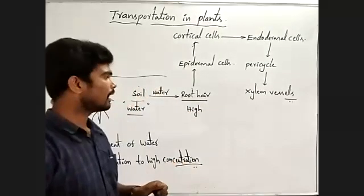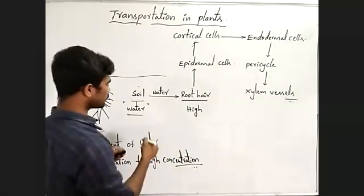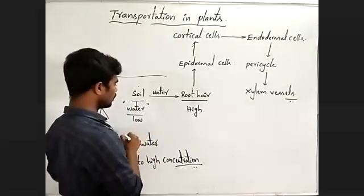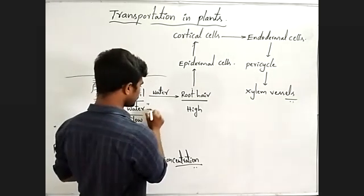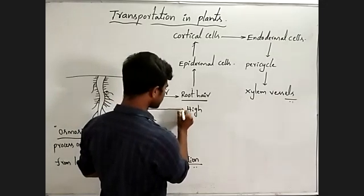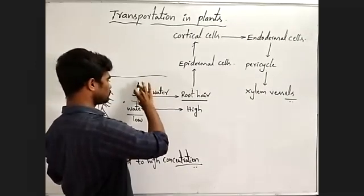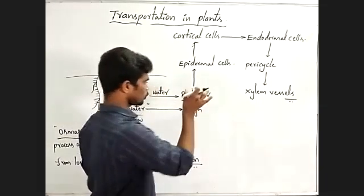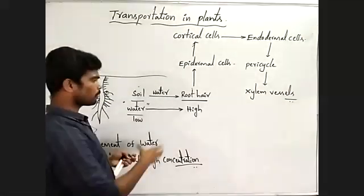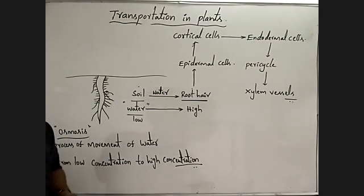Concentration is high inside the root hair cells when compared to the soil. Now what will happen? Water from the low concentrated area is transported — moved — to the high concentrated area. This means, in this situation, water moves from the soil into the root hair. This is the first important step in the absorption of water.